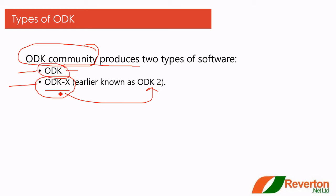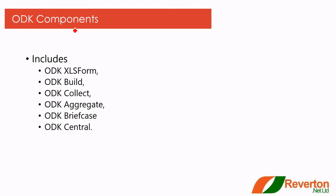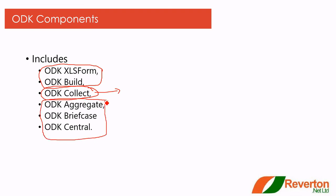Next slide: ODK components. As mentioned, we will cover ODK 1, which has six components or six software tools. Those six are: ODK XLS Form, ODK Build, ODK Collect, ODK Aggregate, ODK Briefcase, and ODK Central. I will give you a brief introduction about these six now, and in the next videos we will study them more deeply. ODK XLS Form and ODK Build are used to create ODK forms. ODK Collect is an Android application used for collecting data on a mobile phone. ODK Aggregate, ODK Briefcase, and ODK Central are the back-end ODK server tools.